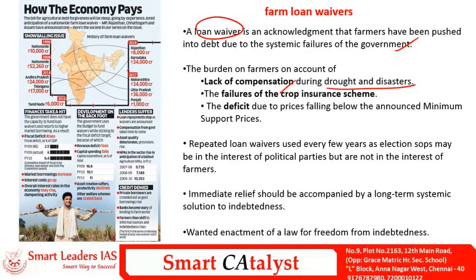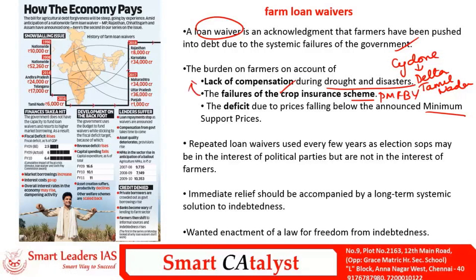The first is the lack of adequate compensation during droughts and disasters — even the compensation offered in the recently cyclone-hit delta parts of Tamil Nadu was inadequate. The second factor is the failure of crop insurance schemes like Pradhan Mantri Fasal Bima Yojana. This insurance scheme is mandatory only for farmers who have taken loans from formal institutions like banks. Since most agri credit comes from informal sources, non-loan farmers do not enjoy crop insurance. Delays and low rates of compensation by insurance companies have also contributed to this failure.